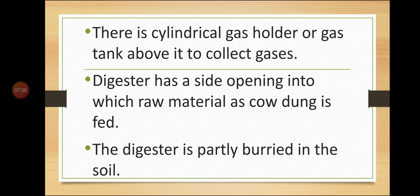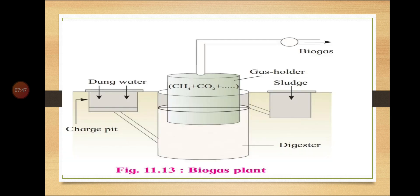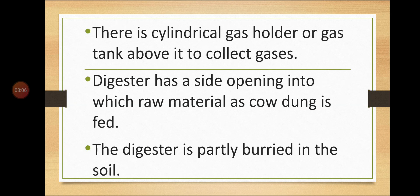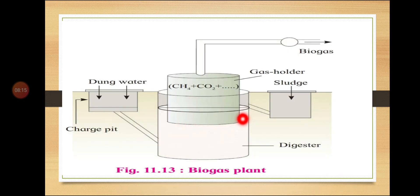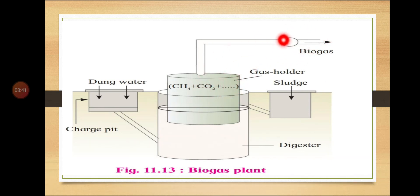The digester has a side opening into which raw material — cow dung and water mixed in equal (1:1) proportion — is fed. Gases such as methane and carbon dioxide are collected in the gas holder, and finally biogas is released. This diagram is important from an exam point of view and can be asked for three marks.